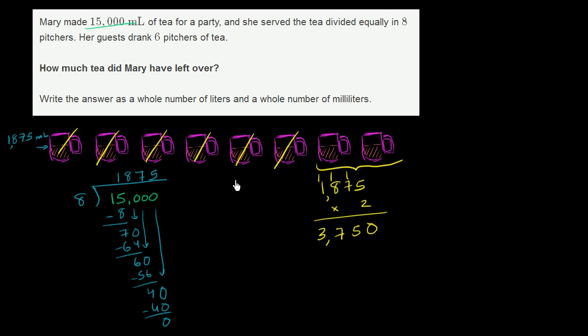Now, they want our answer in terms of a whole number of liters and a whole number of milliliters. And we just have to remind ourselves that 1,000 milliliters is equal to one liter. So you could rewrite this. This is the total number of milliliters that she's left with. We could rewrite this as 3,000 milliliters plus 750 milliliters.